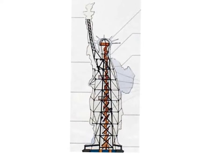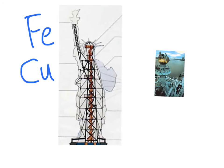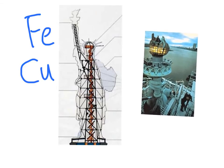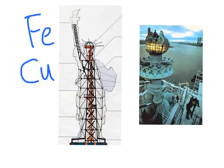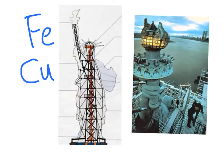In the original design, the iron internal support structure and the copper skin were separated by a shell-like insulation. But the insulation degraded over a period of time and the acidic rain water got into the statue through the statue's torch.